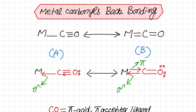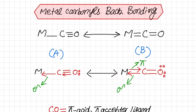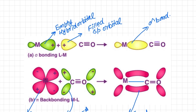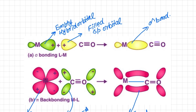Up till now we have cleared the concept of backbonding. There must be some backbonding, as a result of which the metal-carbon bond becomes a double bond and thus more stable. I hope you have understood this lecture. If you have any questions, let me know in the comment section and I will answer as soon as possible. Thank you. Allah Hafiz.